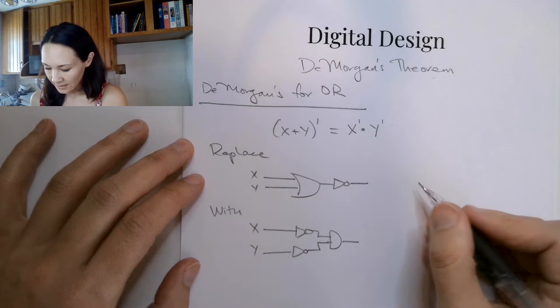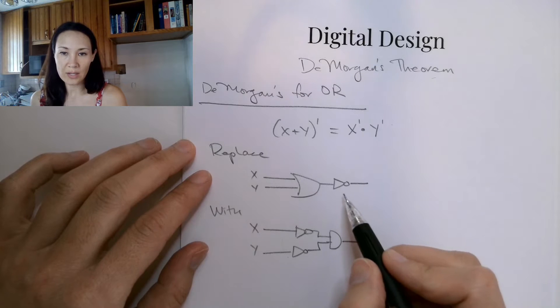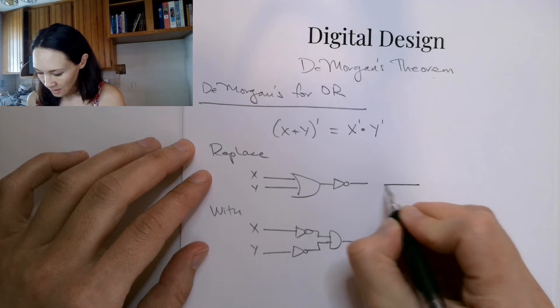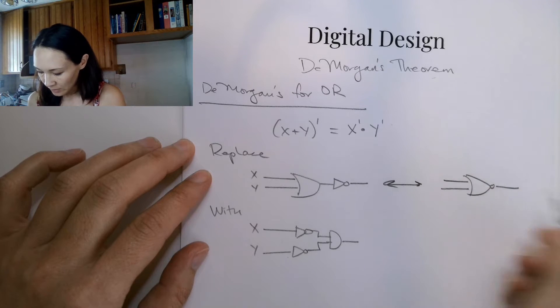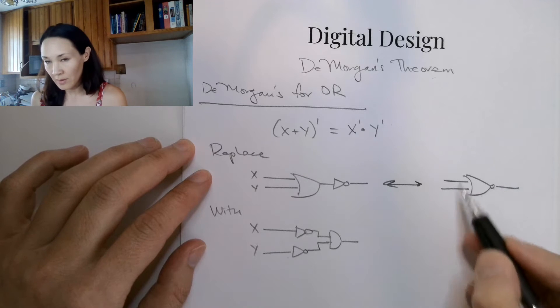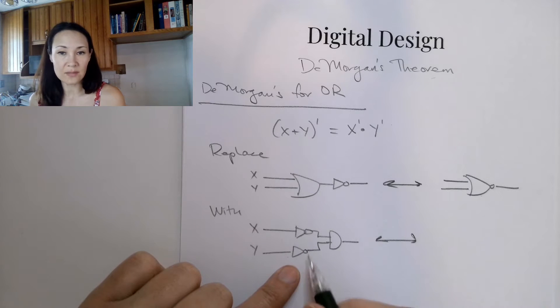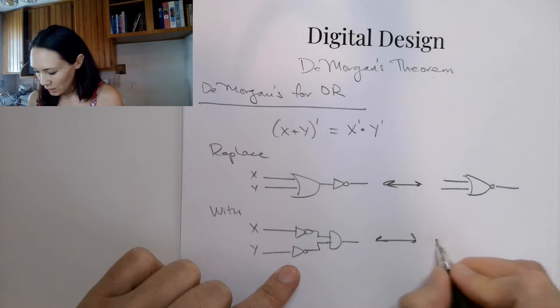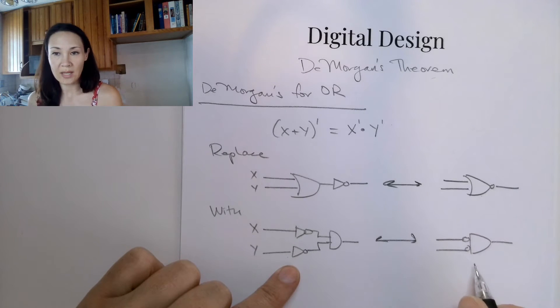And just as an aside, a lot of times in circuit diagrams, instead of seeing the inverter actually drawn out like this, you might see this little bubble on the end. So that means there's an inverter on the end of this OR gate. So you might recognize this as a NOR. And then same story over here, instead of seeing these inverters drawn out, you might just see a little bubble on each of these inputs before they go into an AND.